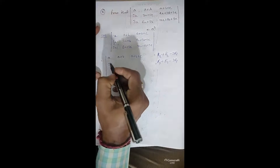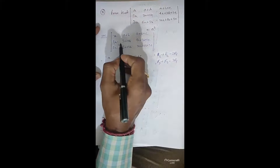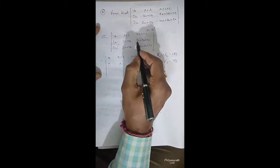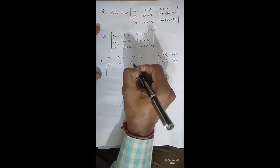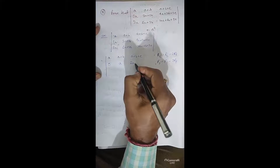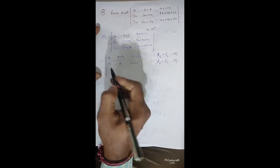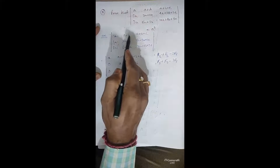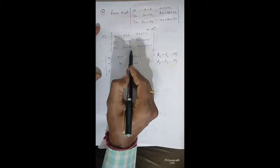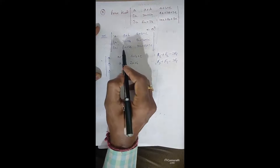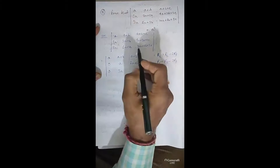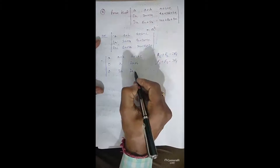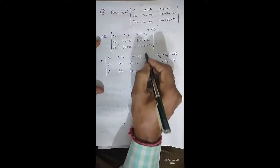We can simplify further. If we multiply R2 by 3 and subtract from R3 (i.e., R3 minus 3·R2), it simplifies more. Applying R3 minus 3·R2: row 3 becomes (0, 3A−3A, 7A−6A) = (0, 0, A). So now the matrix has rows: (A, A+B, A+B+C), (0, A, 2A+B), (0, 0, A).